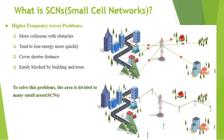What is SCN? A small cell network. In 5G, the frequency is higher than in 3G and 4G. Higher frequency waves have their own problems: higher frequency has more collision with obstacles, tends to lose energy more quickly, covers shorter distances, and is easily blocked by buildings and trees.